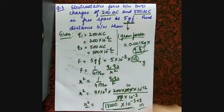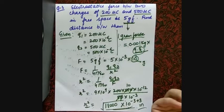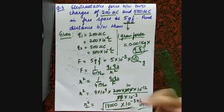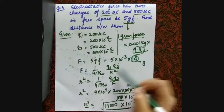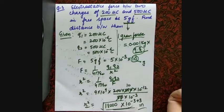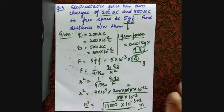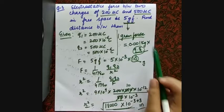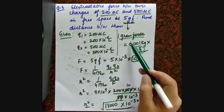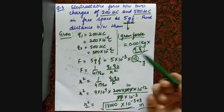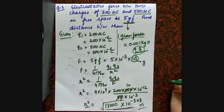Don't get confused with gram-force or kilogram-force notation. Wherever force is given in gf or kgf, just convert it to Newtons by multiplying by g (9.8 or 10). Then proceed with the standard Coulomb's law formula.